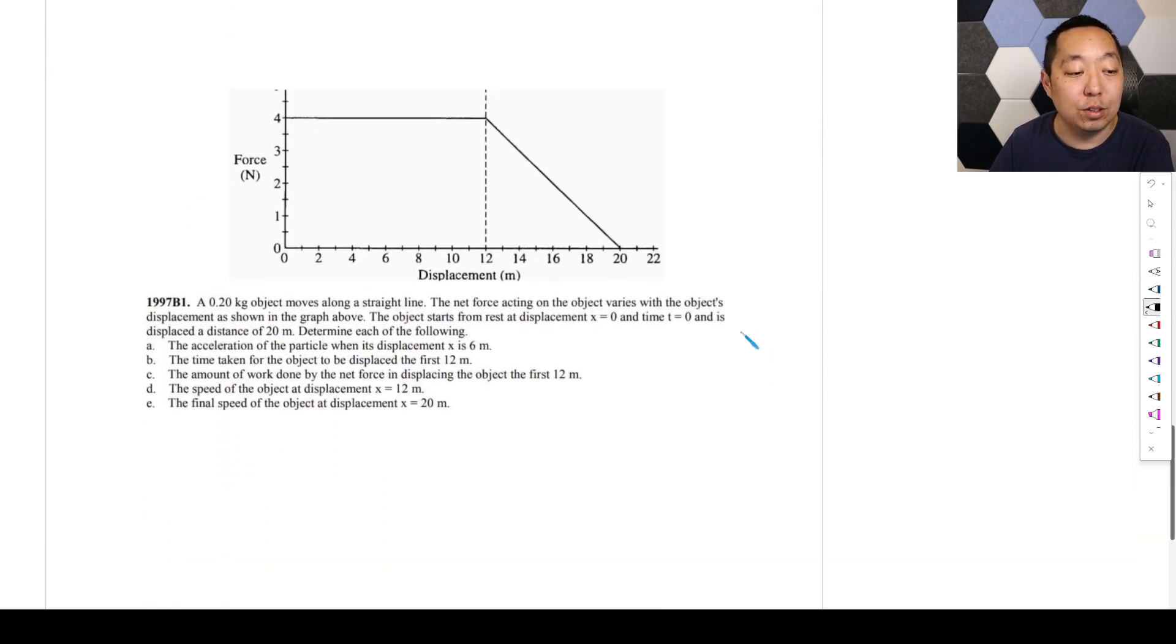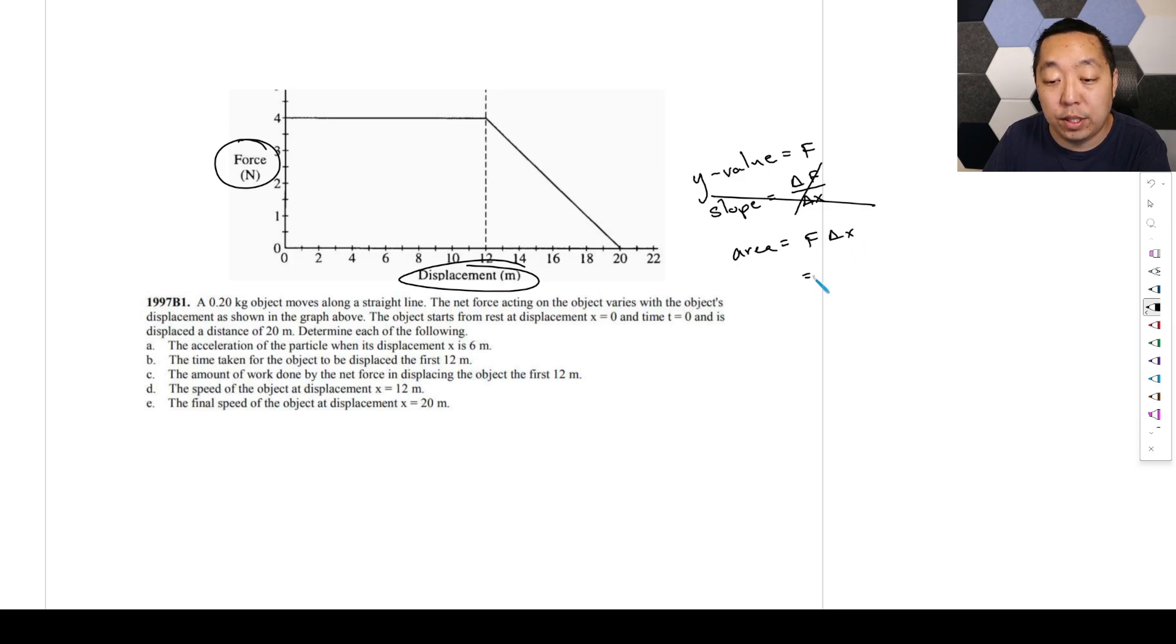So let's go through a problem where we have to use that. We have a 2.2 kilogram object moves along a straight line. The net force acting on the object versus displacement is given before here. Therefore, the y value, just go through the process. Y value is going to be our force. Our slope is going to be the change in the y variable over the change in the x variable, and this doesn't have any meaning. Our area is going to be the y variable times the change in the x variable, and that's going to be our work. That's really important to understand.